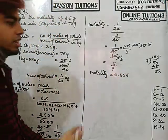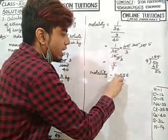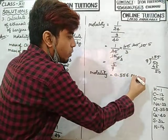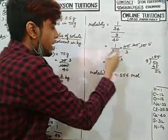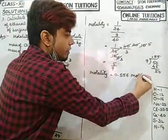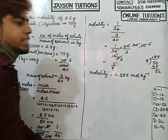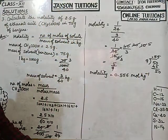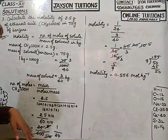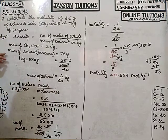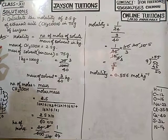So molality ≈ 0.556. The unit is moles per kilogram (mol kg⁻¹), since the denominator is in kilograms. I hope you understood all the problems today. The remaining problems I will teach in the next class.